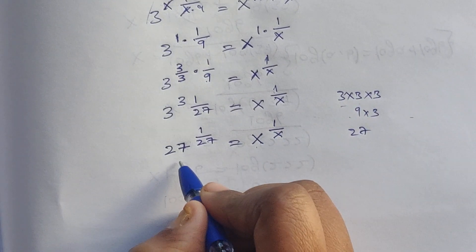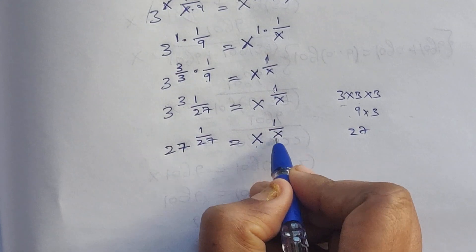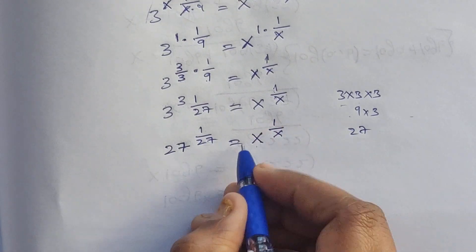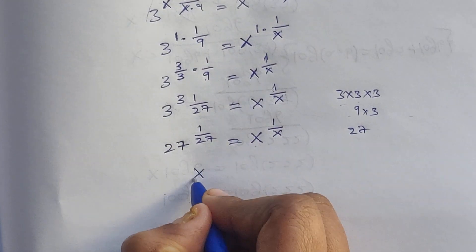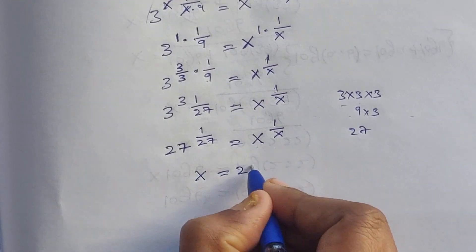So here x equals 27. 1 divided by x equals 1 divided by 27. Therefore, the value of x is 27.